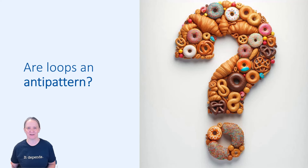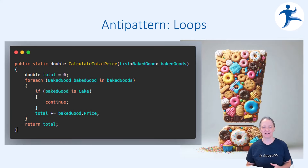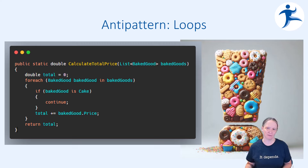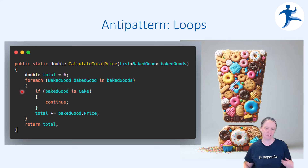So let's take a look at this loop that I showed in our video. We're running a bakery, and we need to calculate the price of the remaining baked goods. We're going to exclude cakes, because cakes have their own special rules. In this example we're going to use our for-each loop to go through the collection. We have a running total; for each baked good, if it's a cake, continue on — we don't want to calculate the total with the cake. Otherwise, add the price to the running total, and then return that running total.